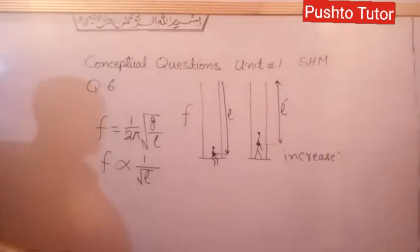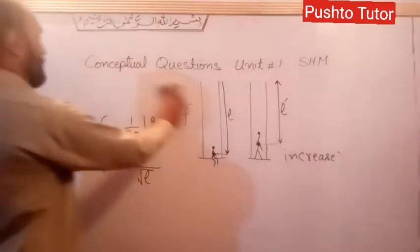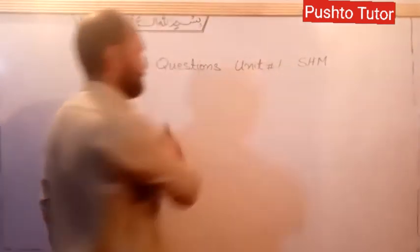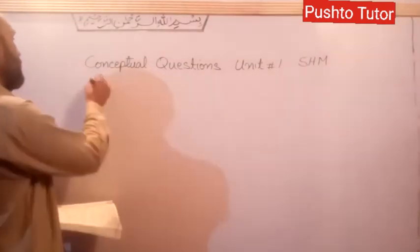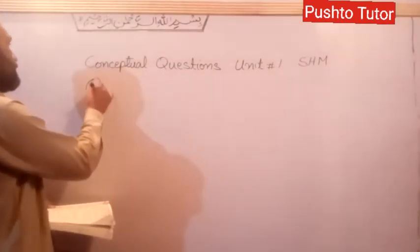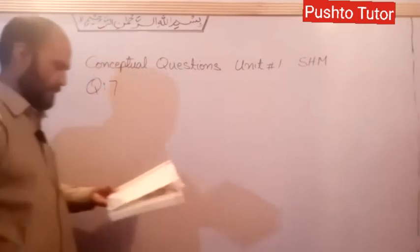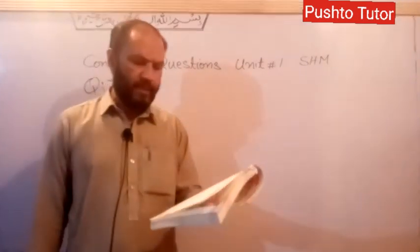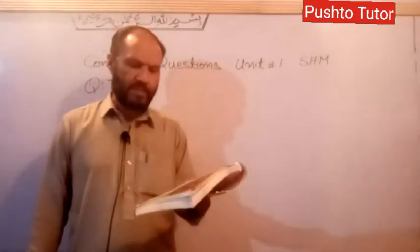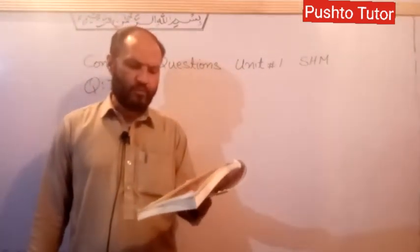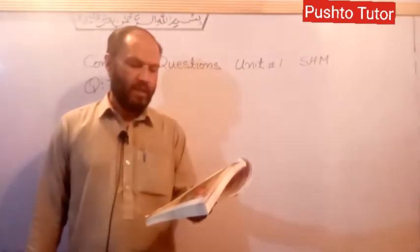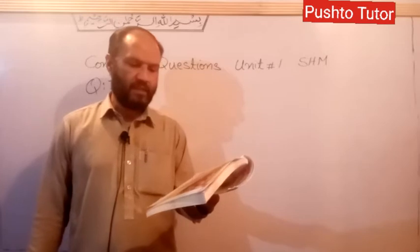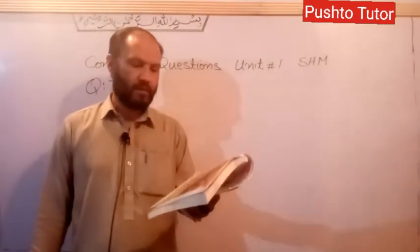Question number seven. Explain the difference between the speed of a transverse wave traveling along a curve and the speed of a tiny colored part of the curve.